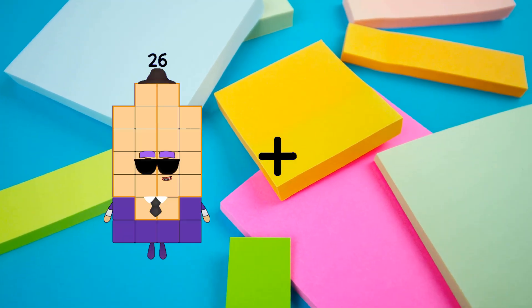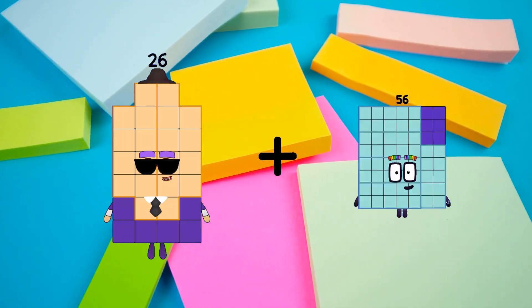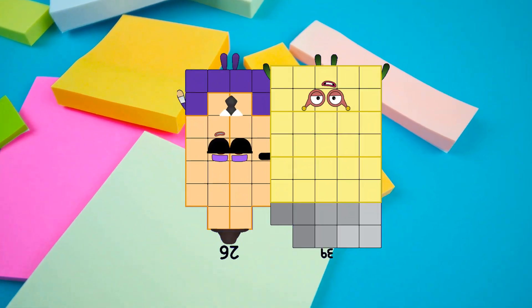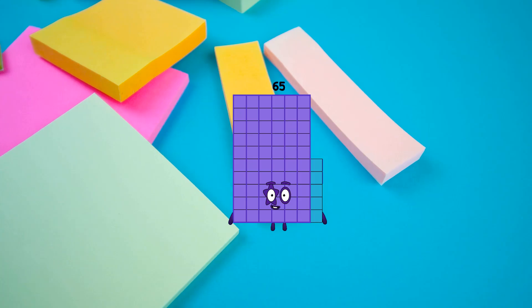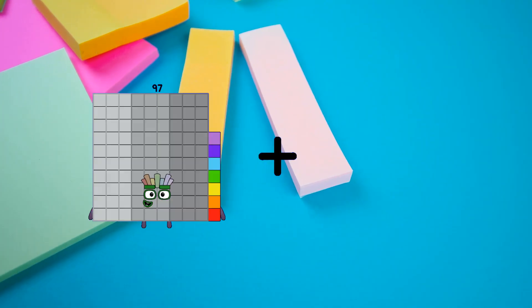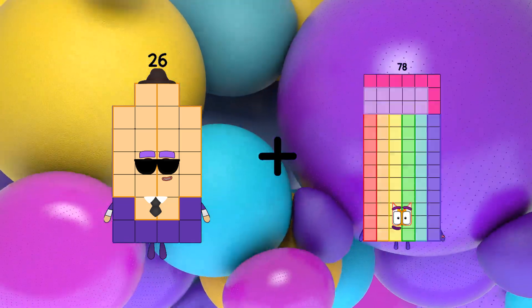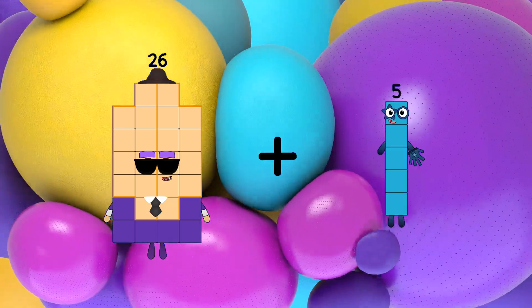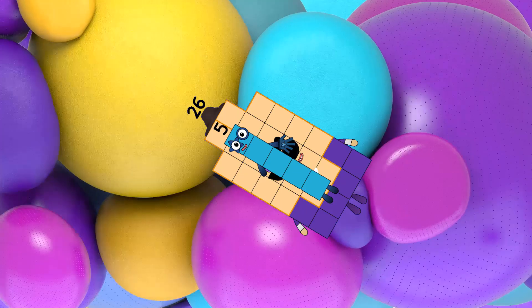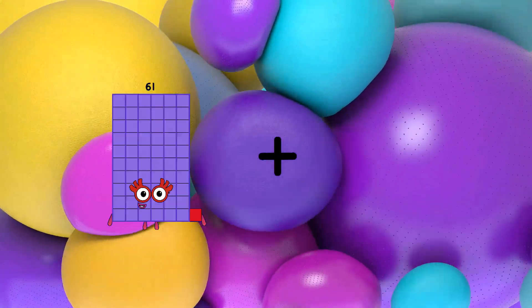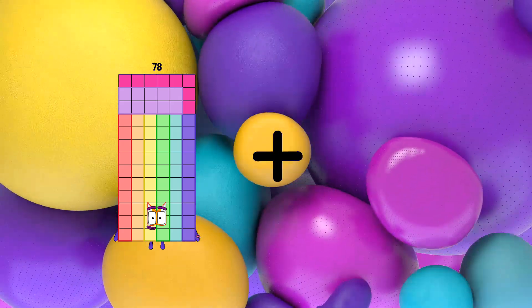26 plus 39 equals 65. 26 plus 5 equals 31.